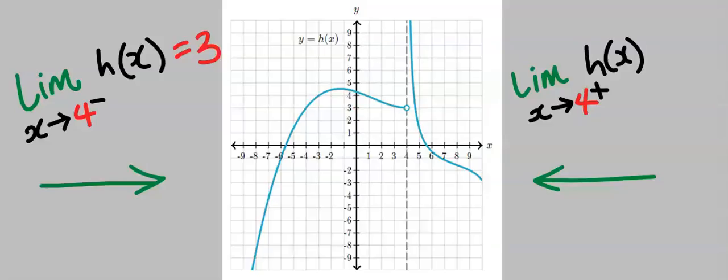Next, let's consider the approach from the right. From the right, you can see that this graph tends to infinity. Hence, from the right-hand side, the limit does not exist.